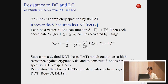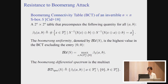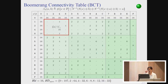An S-box can be completely specified by its linear approximation table, so it is possible to recover the S-box from the LAT. From a good DDT, one may also recover a DDT-equivalence class of S-boxes, though this functionality is currently not supported by Pagan. As mentioned in yesterday's talk, resistance to boomerang attacks is related to the boomerang connectivity table (BCT), boomerang uniformity, and boomerang differential spectrum. Pagan computes the BCT.